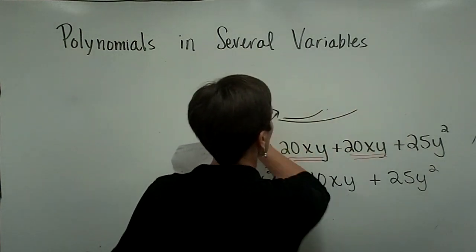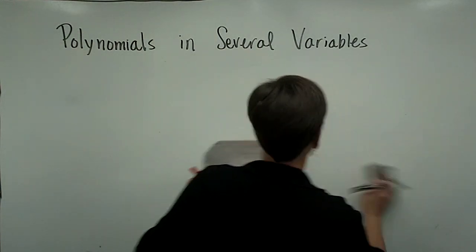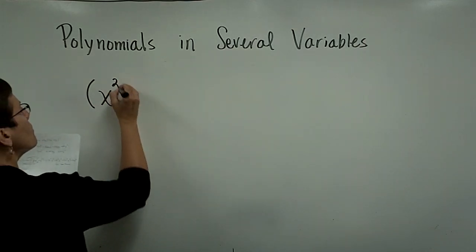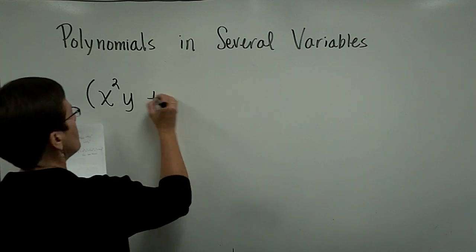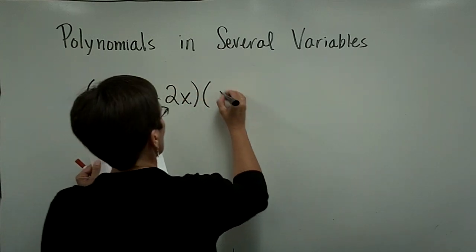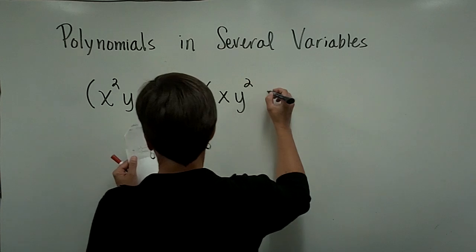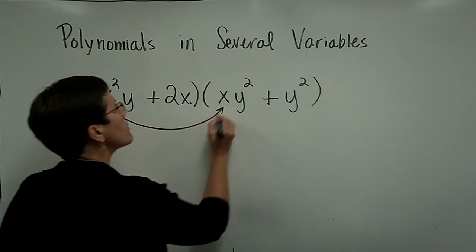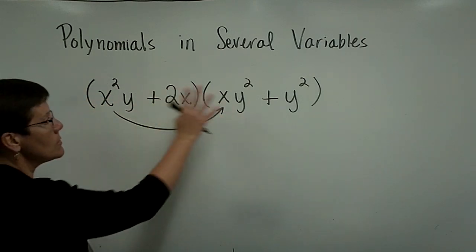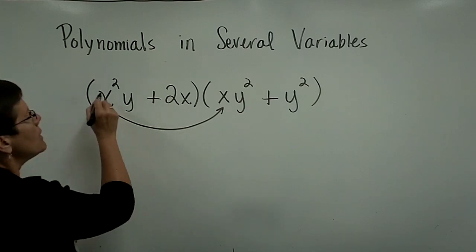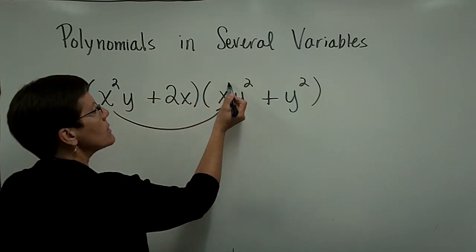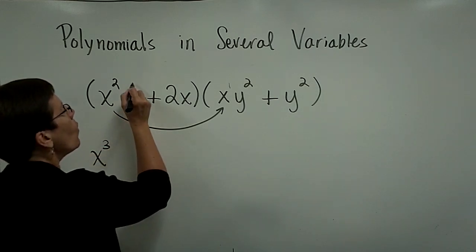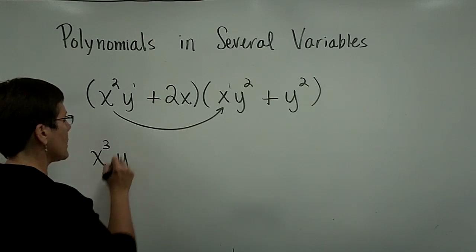Let's take a look at multiplication of this binomial times this binomial. We're going to FOIL. So I'm going to take, first of all, this times this. The x²y times xy². x² times x¹ is x³, because I'm adding their exponents. y¹ times y² is y³. I'm done with that first two products.